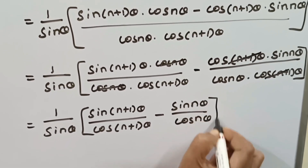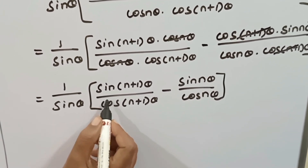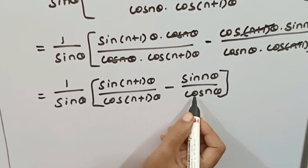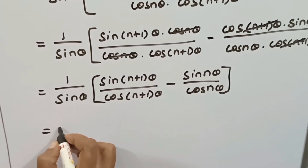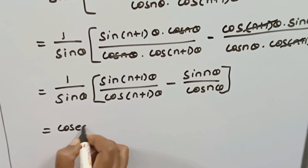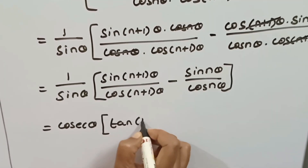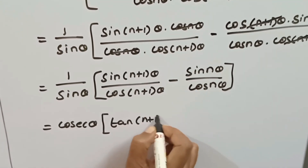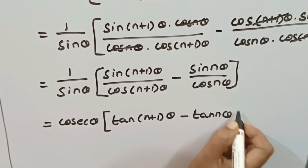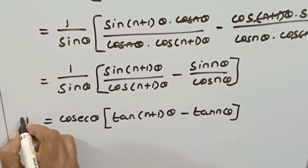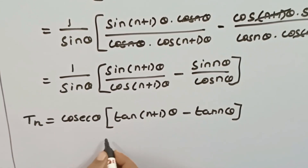These terms exist. Since sin/cos = tan, we can write this as tan((n+1)θ) minus tan(nθ). So the general term is (1/sin(θ)) · [tan((n+1)θ) − tan(nθ)]. Here we can write the general term as the difference of two tan terms.